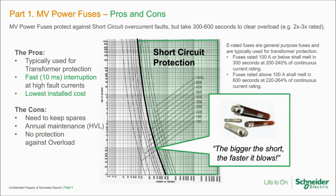Here's a fuse curve. It's complex, and a lot of times people dismiss these curves as too much information. I'm highlighting the 40E rated curve — the fuse curve for a 40E rated fuse — and you can see where 40 amps falls. It's important to note that this fuse will take 300 to 600 seconds — in other words, minutes — to burn out and clear the overcurrent.